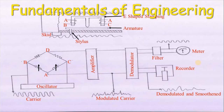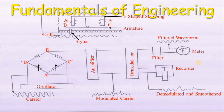From the demodulated wave, the signal is transferred to the filtered waveform, from which the numerical assessment is obtained directly at the meter. In this way, the Taylor Hobson Talysurf works. It consists of the armature and E-shaped stamping connected with the stylus, two coils connected with two resistors forming an oscillator. When connected to the amplifier the modulated carrier is obtained, which transfers to the demodulator giving a smoothened wave. The filtered waveform then provides the surface roughness value at the meter, and the result can also be recorded at the recorder.